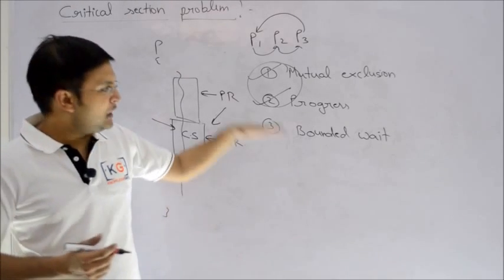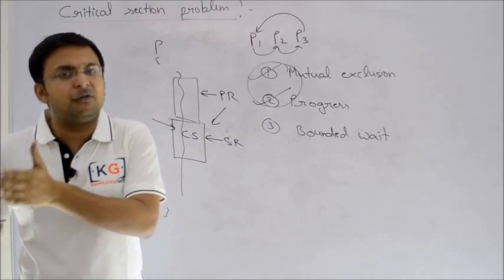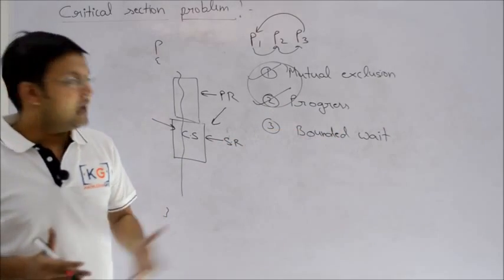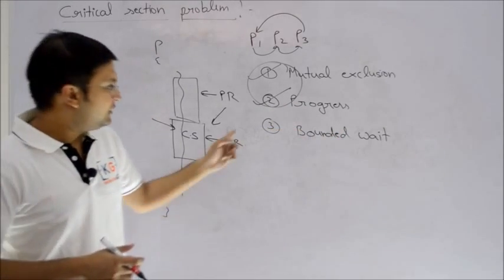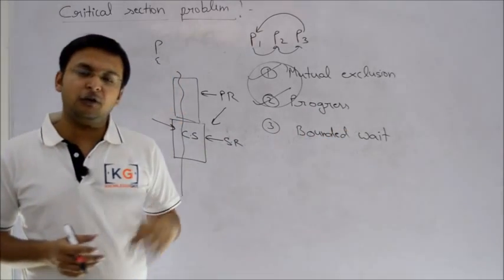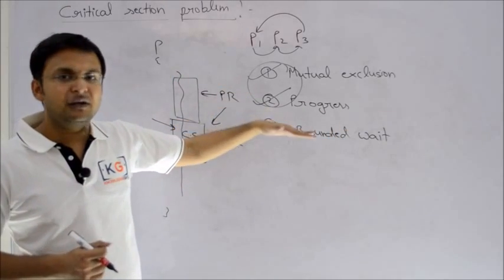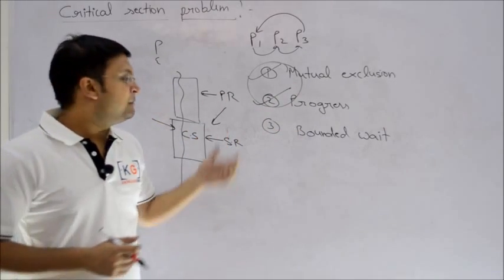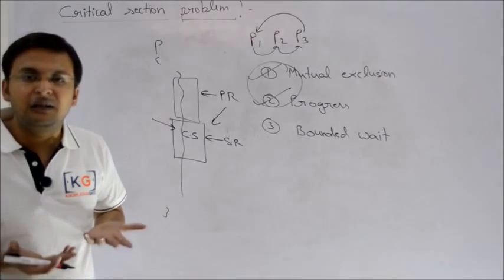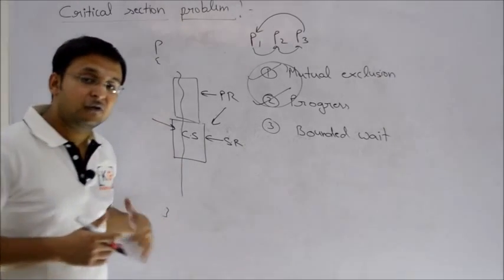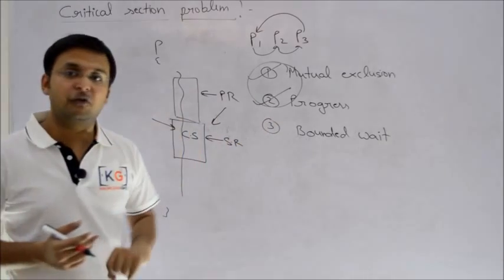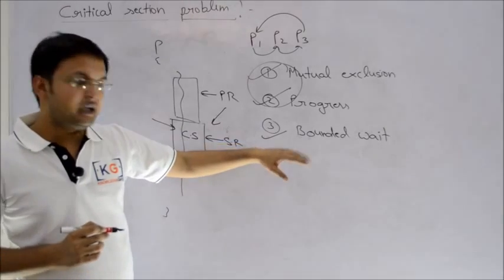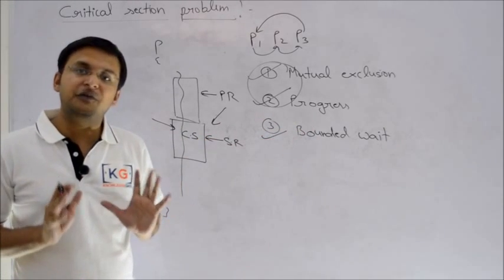There should be a time limit or some unit system after which you guarantee that the process will get critical section entry. That criteria is called bounded wait. It says after a specific time limit or after a specific number of turns, the process will be bound to enter into critical section. But this criteria cannot be fulfilled every time. Even basic versions of semaphores fail on bounded wait. So it is optional.